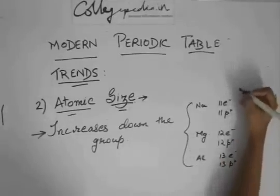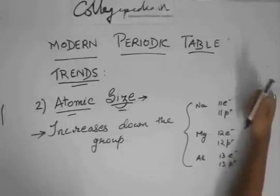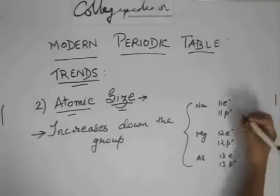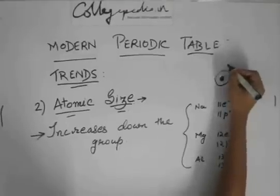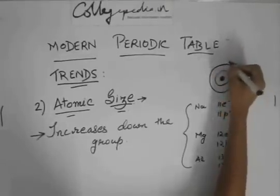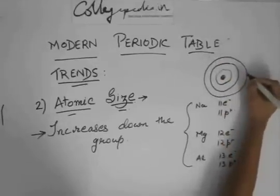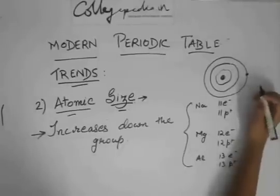What will happen is that in this, the number of shells are not changing, they are remaining constant. In sodium, there was one electron. In magnesium, there is one more proton and another electron. But there is no addition of an extra shell.